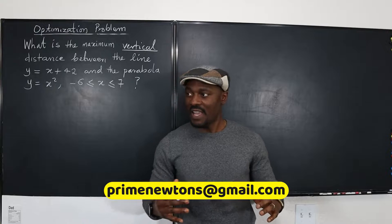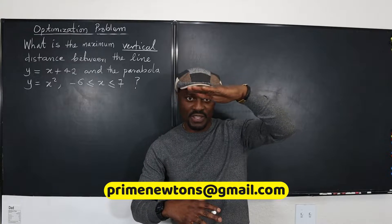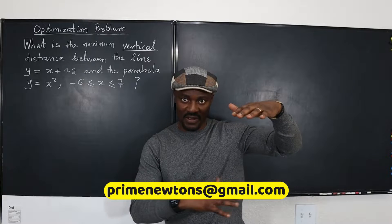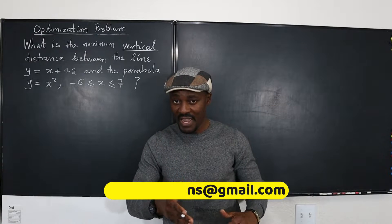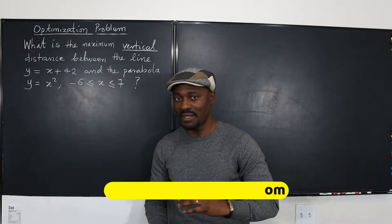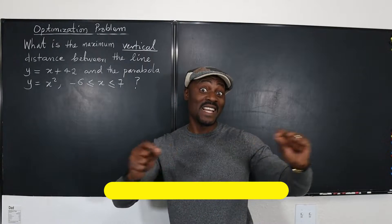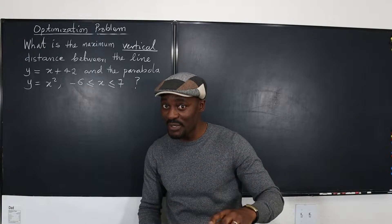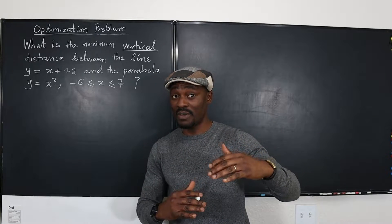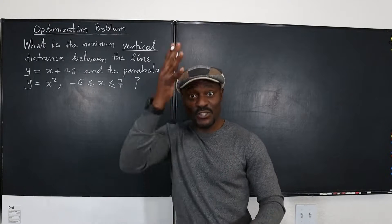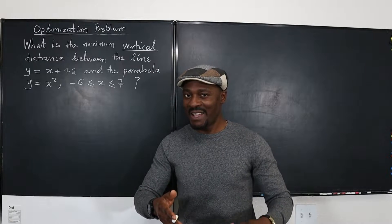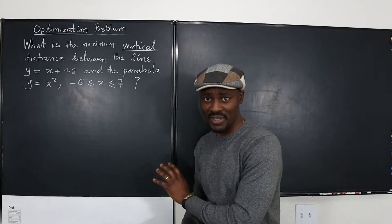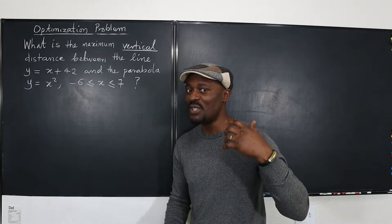We want to see how far this line, or this function when you graph it, is from another function — but we want to look at the vertical distance. This question is interesting because it is not saying what is the distance between them. It's saying what is the vertical distance. So when you measure the distance between the two lines or curves, it has to be a vertical line. Let's have a picture of what this graph looks like and then we can see what this could mean.